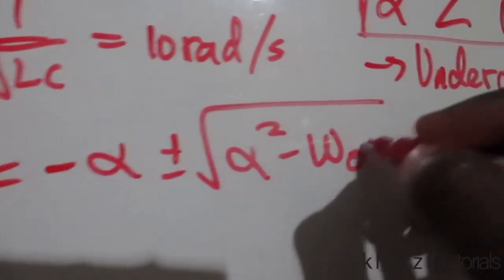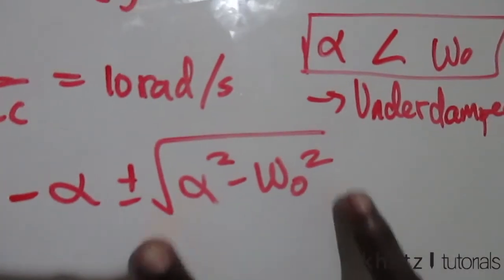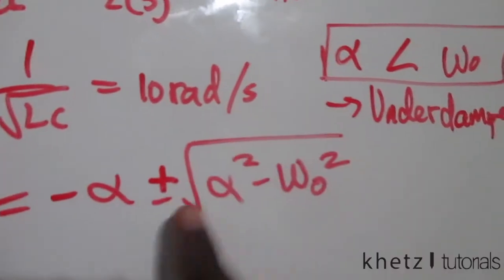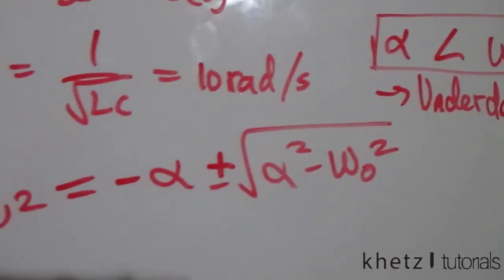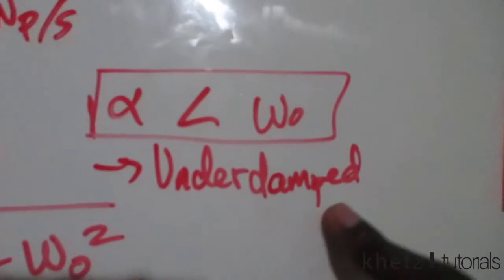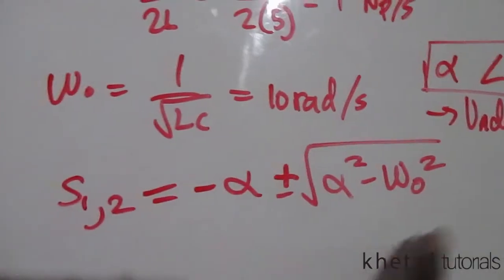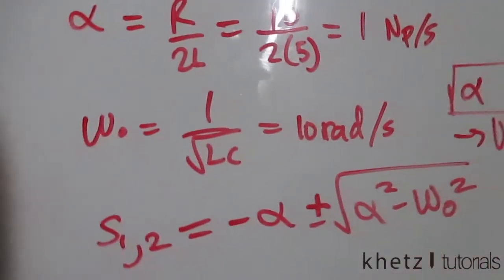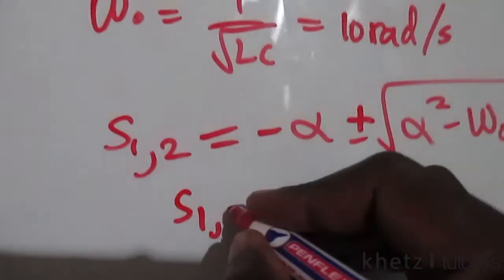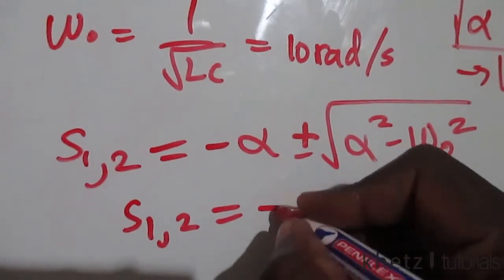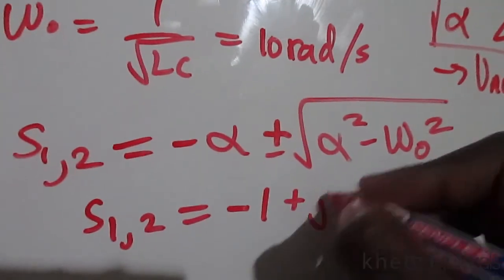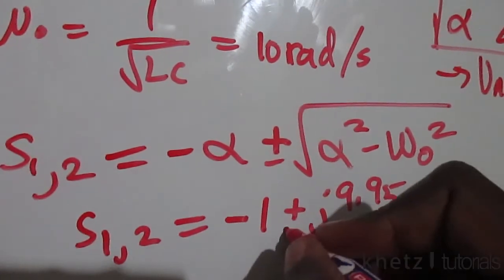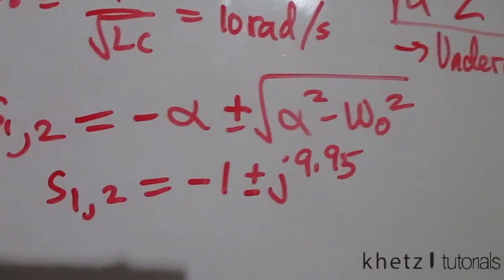Since alpha is less than omega_o, the square root term will be imaginary, which is why complex mode is needed. The roots s1 and s2 are -1 + j9.95 and -1 - j9.95 respectively.